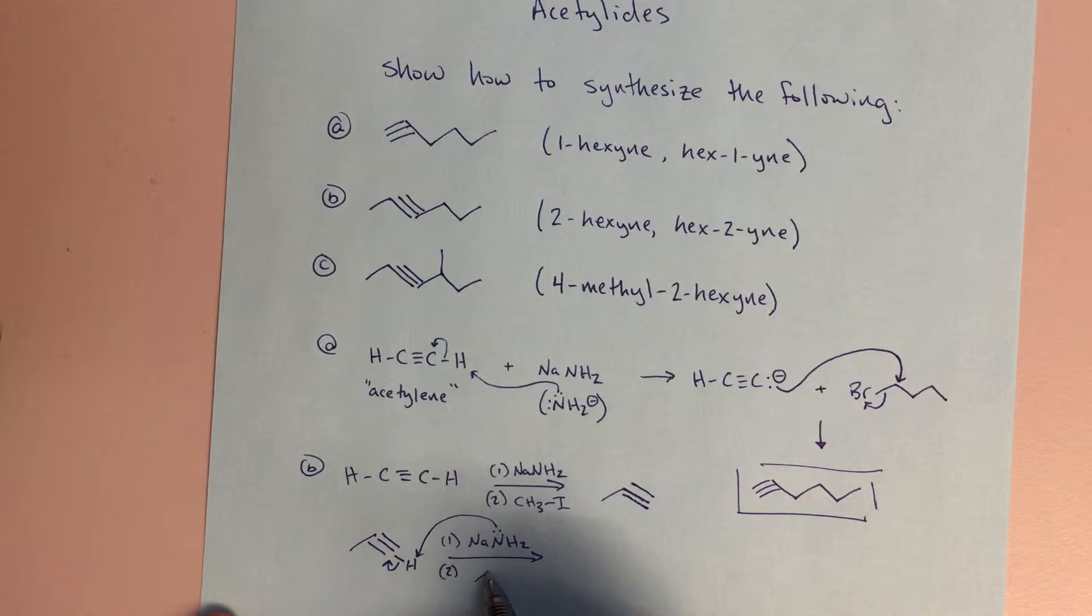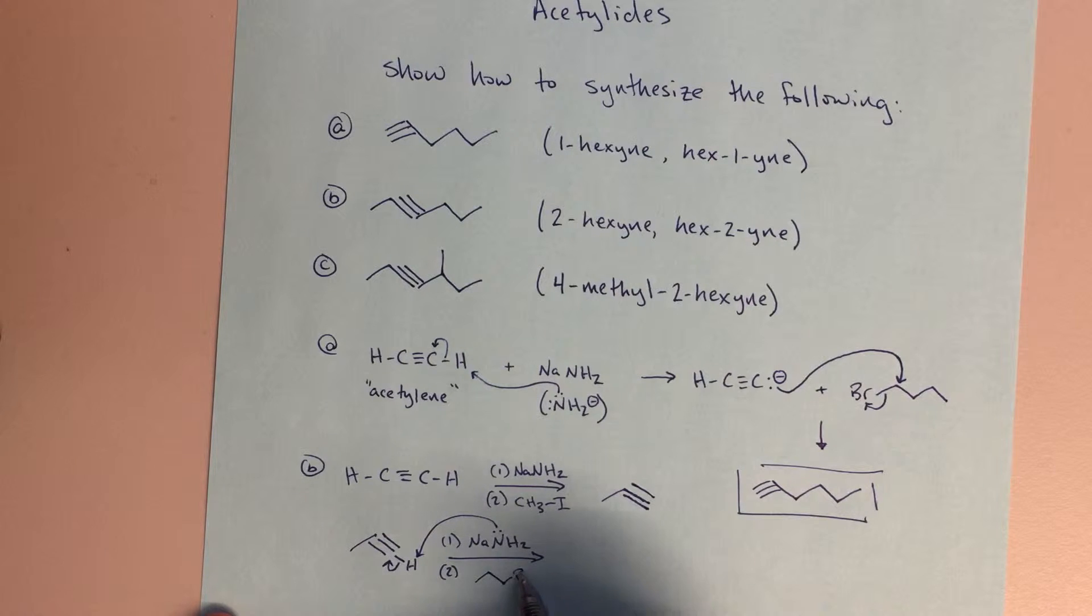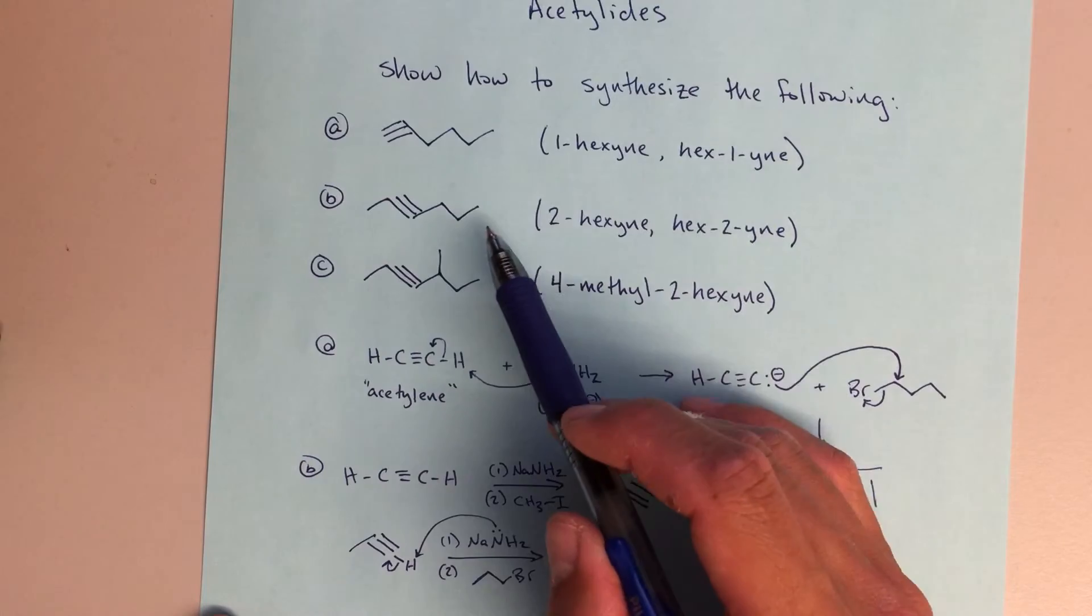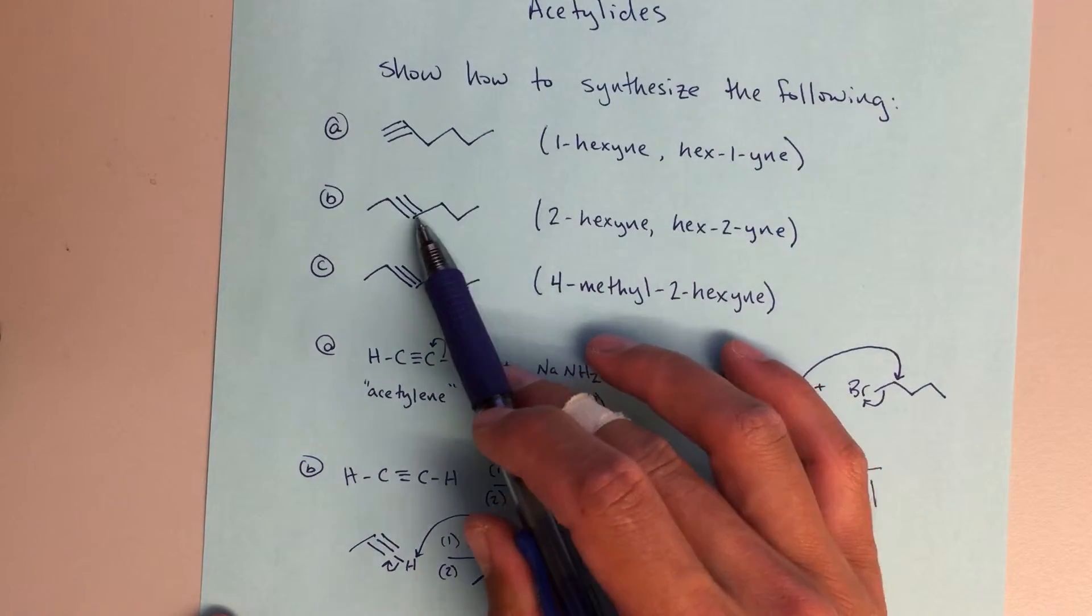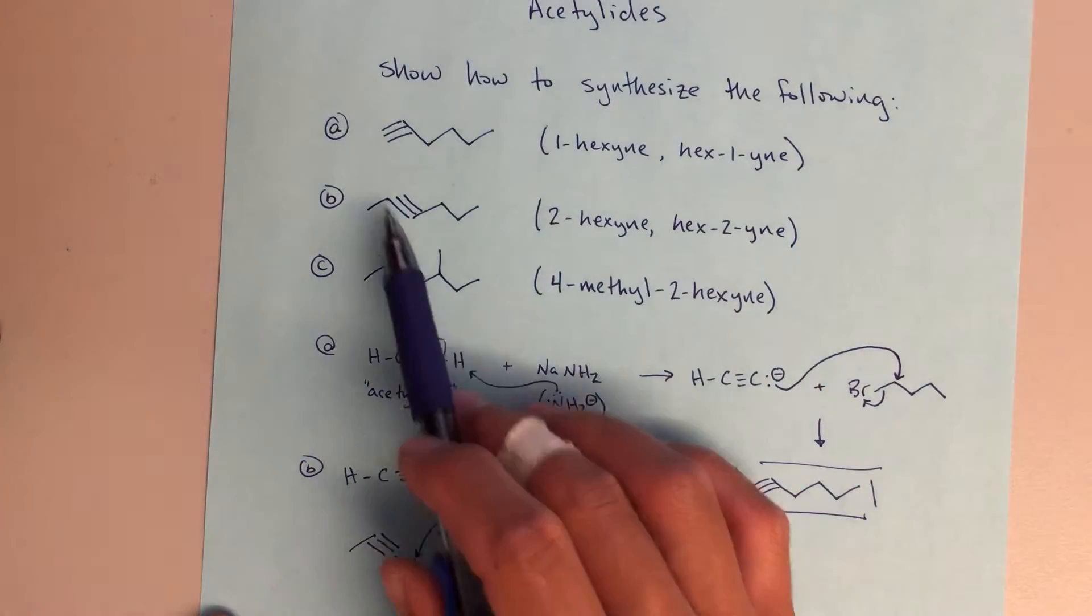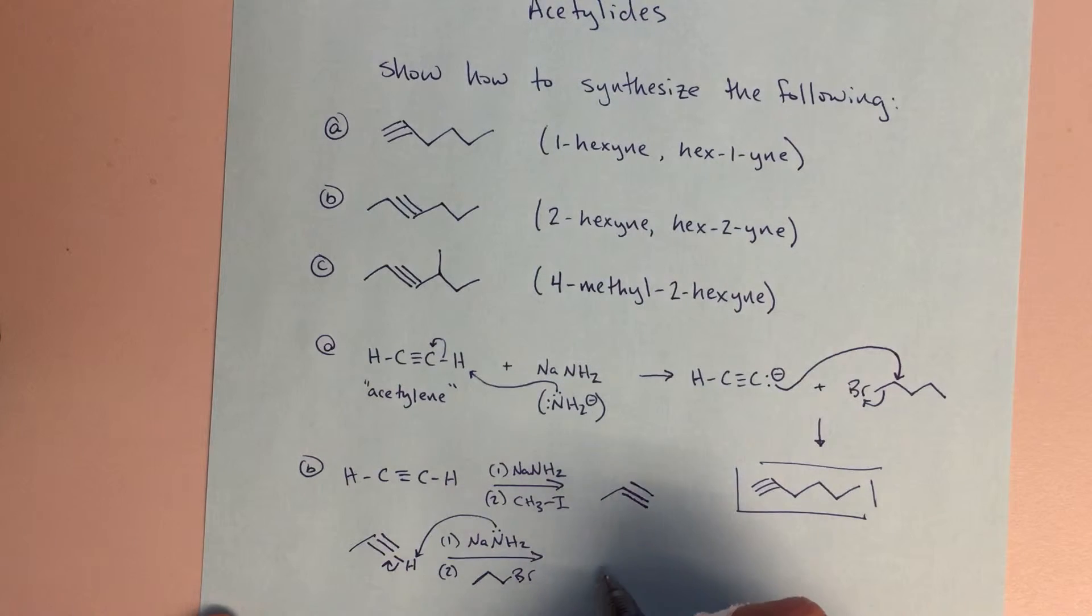In this case now I'm going to add n-propyl bromide. Again, bromine or iodine here doesn't really matter, but I want to add three carbons to this chain. Going back here, one, two, three carbons need to be added to this end. I've added one carbon to this end. This will lead me directly to my final answer. This is my product here.